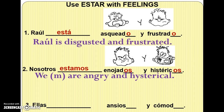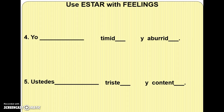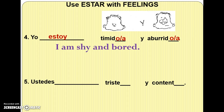Since it is nosotros, the feelings or conditions also need to match that ending, so we are angry and hysterical — nosotros, masculine. Number three: for ellas, the correct form of estar is están with an accent over the A. Since it is ellas, it should be ansiosas y cómodas, meaning they, feminine, are anxious and comfortable. Number four: for yo, the correct form is estoy. Since this describes yourself, if you're a girl it would be tímida and aburrida; if you're a boy, tímido and aburrido. Either way it means I am shy and bored.